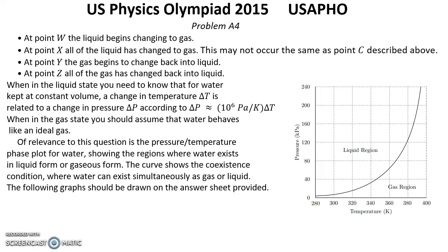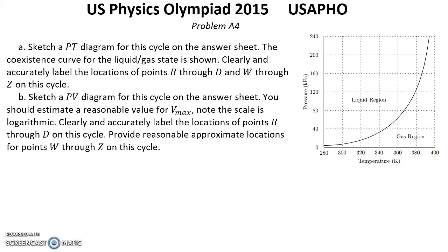The following graphs should be drawn on the answer sheet provided. Question A: The coexistence curve for the liquid-gas state is shown — clearly and accurately label the locations of points B through D and W through Z on this cycle. Question B: Sketch a PV diagram for this cycle on the answer sheet. You should estimate a reasonable value for V maximum — note the scale is logarithmic. Clearly and accurately label the locations of points B through D on this cycle, and provide reasonable approximate locations for points W through Z.